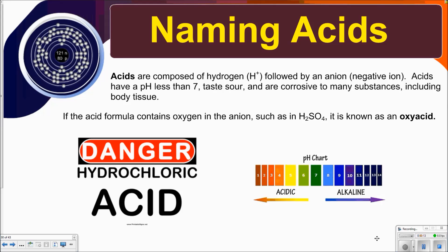A couple of things about acids. We learned in a video a couple lessons ago that they are composed of a hydrogen ion followed by an anion, which is a negative ion, but the positive ion is always hydrogen. Acids have a pH that is less than 7.